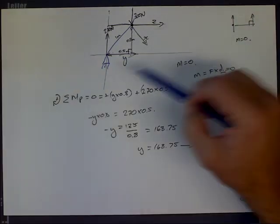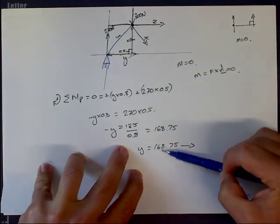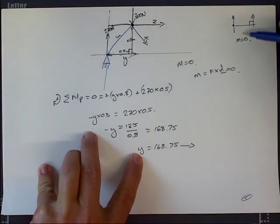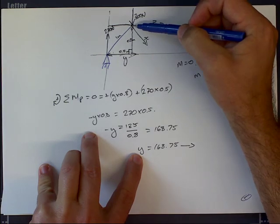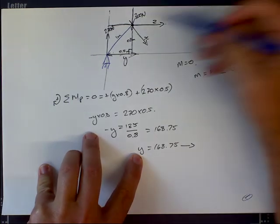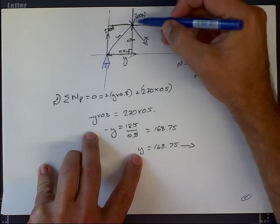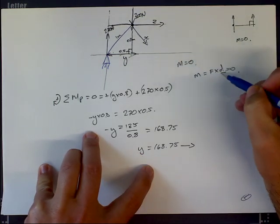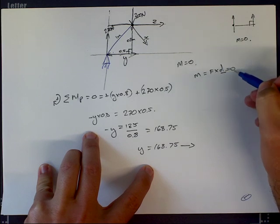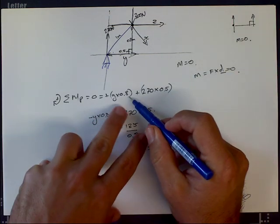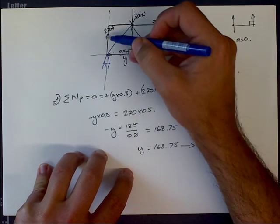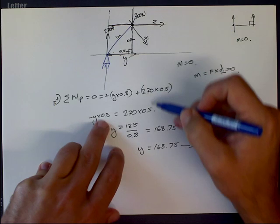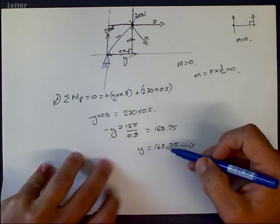We started off by calculating member y by choosing a moment at a specific point. We chose this specific point because it was an intersection of unknown forces which, when multiplied by the distance, means those moments become zero. This is why in our calculation we only had the two reaction forces and the y force, which is unknown, in our equation, making it quite simple to get y.